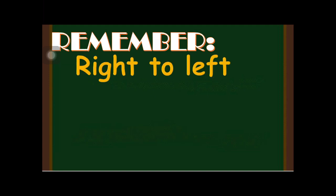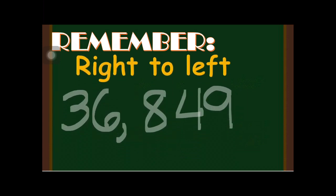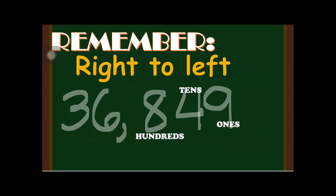Again, in identifying the place value, we start from right to left. For example, 36,849: digit 9 is in the ones place, digit 4 is in the tens place, digit 8 is in the hundreds place, digit 6 is in the thousands place, and digit 3 is in the ten thousands place.